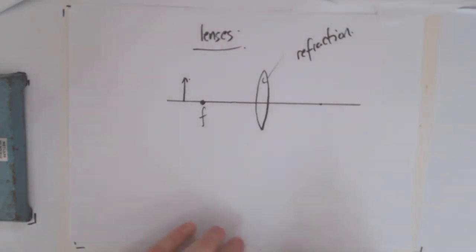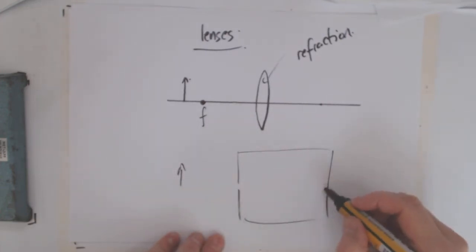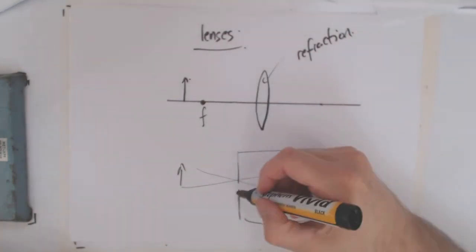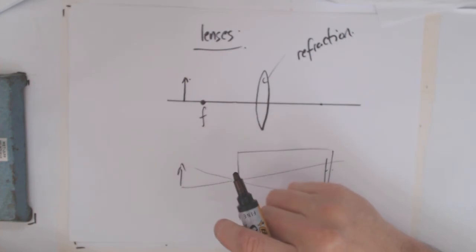If you remember the pinhole camera where we had just a hole, we could have our object and we could have a screen and you ended up with this object on the back. We said that's really nice, but if we make the hole bigger we lose our image, and as we make it smaller we lose our brightness.